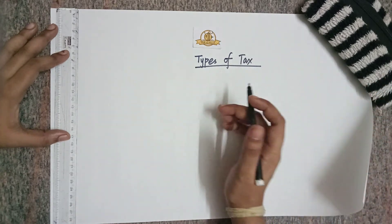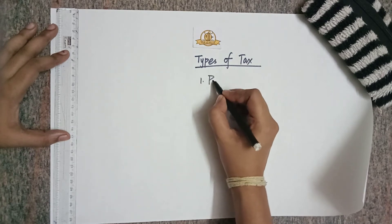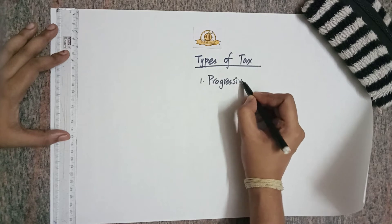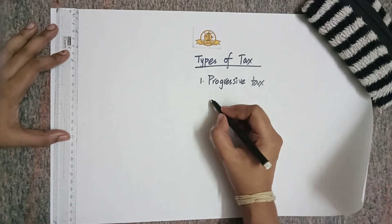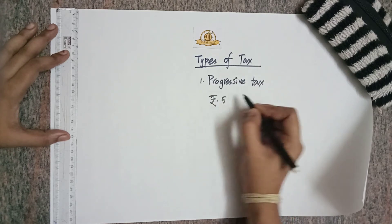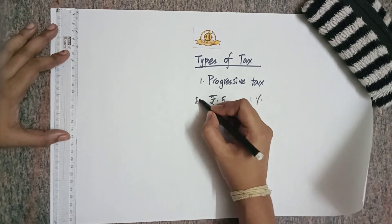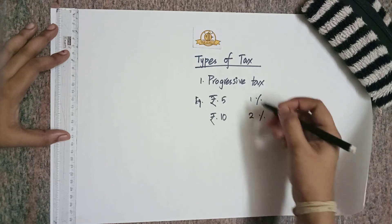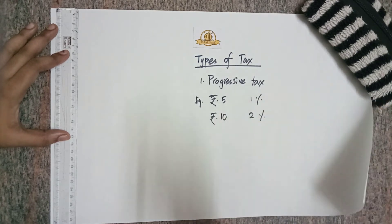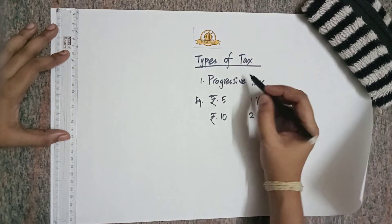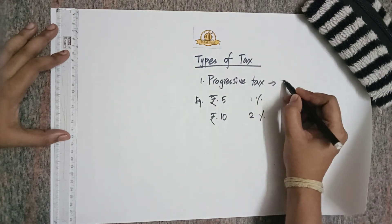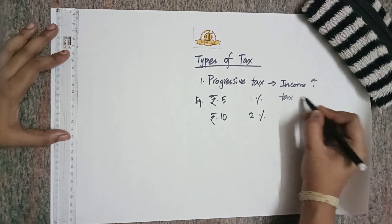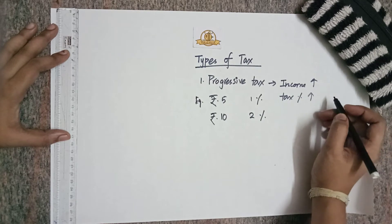The first type is progressive tax. In progressive tax, as income increases the tax percentage also increases. For example, if you are earning rupees 5 then your tax will be 1%, and if you are earning rupees 10 then your tax percentage will be 2%. So the tax percentage rises based on the rise in income. This is followed in many countries.